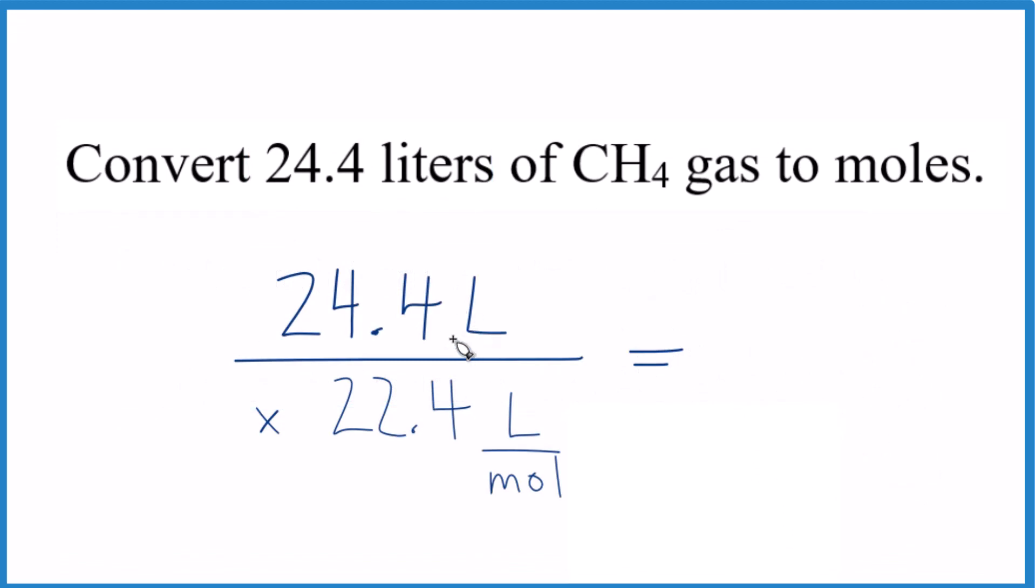Here we have liters on top and on the bottom. So that's going to leave us with moles. That's what we're looking for, so we know we set it up correctly. 24.4 liters divided by 22.4, kind of strange numbers here. We get 1.09, and the units are going to be moles. That's all that's left there.